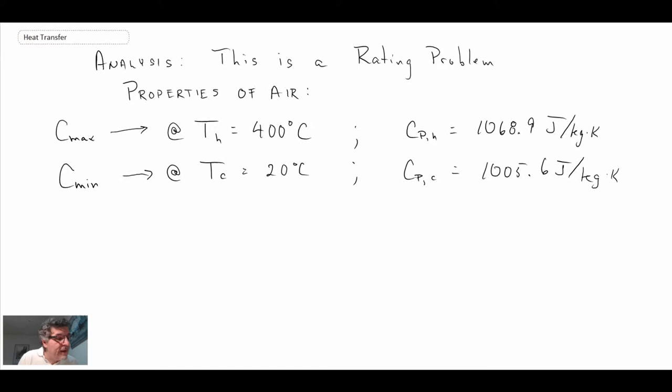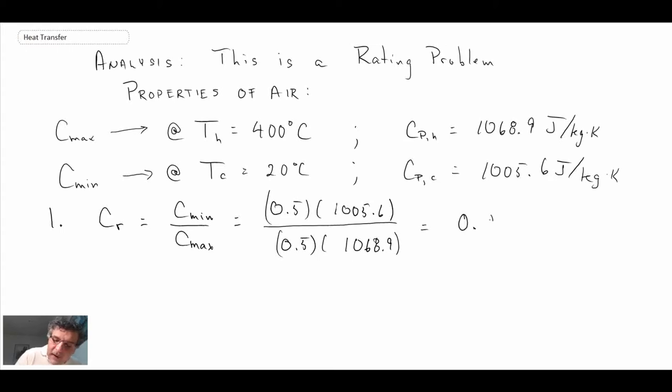Looking at the step-by-step procedure, C_R is C-min over C-max. Mass flow rates are the same, so with that we get the ratio to be 0.9408. That's the first step.